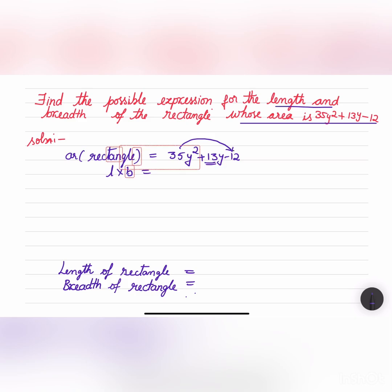If you multiply 35y² and -12, you'll get -420y². The factors of 420y² are 28y and 15y, so that this is plus and this is minus. If we substitute those instead of 13y, that is 28y - 15y, that gives us 13y.